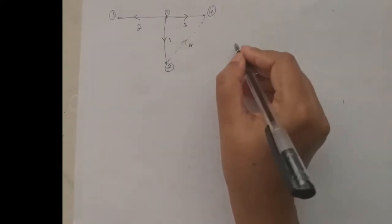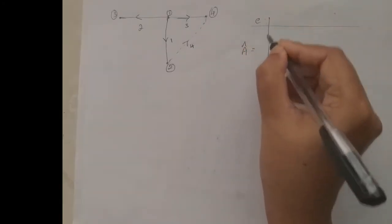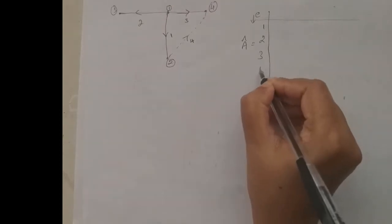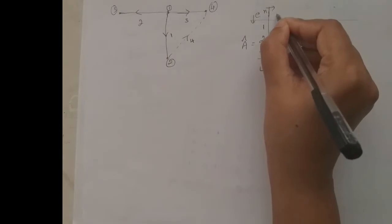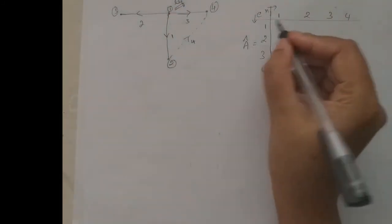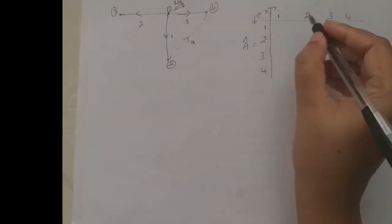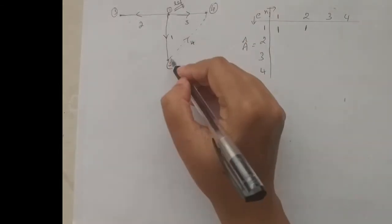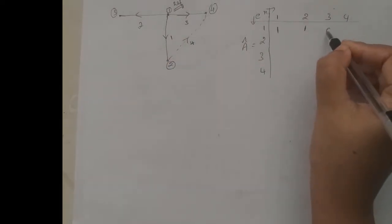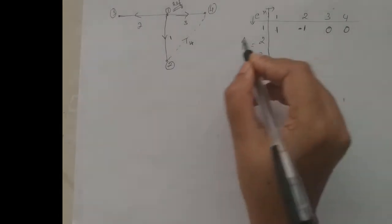From the oriented graph we have to form matrix A-cap. Matrix A-cap has columns for elements one, two, three, four, and rows for nodes one, two, three, four. Node one is the reference node as mentioned in the problem. For the first element, oriented and connected between one and two: it is incident to node one and node two, not incident to nodes three and four. Since it is away from node one, it is plus one, and towards node two, it is minus one.